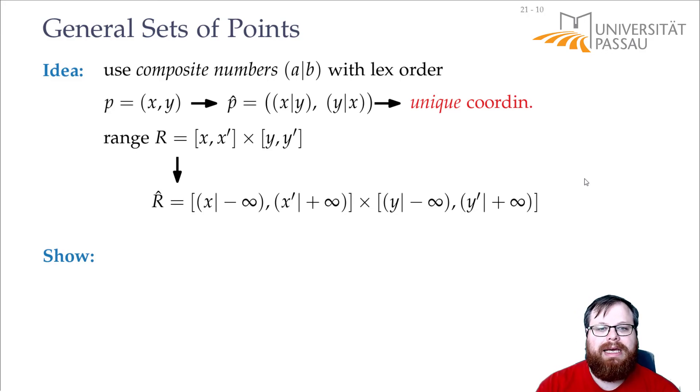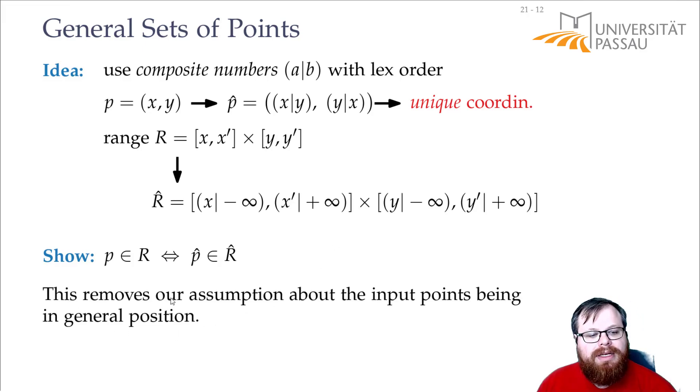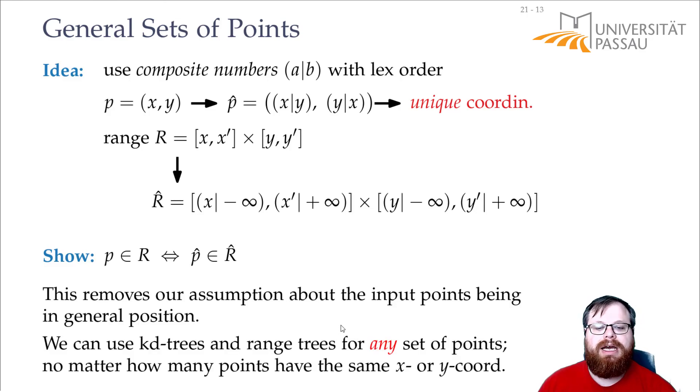There's one more thing we technically have to show, that one point p lies inside this range, if and only if the composite point lies inside this range. But I leave that up to you, that's almost trivial. But this way, we can remove our assumption that the points are in general position, we can solve all sets of points, and we can use the KD trees and range trees for them, no matter how many of them have the same x- or y-coordinate.